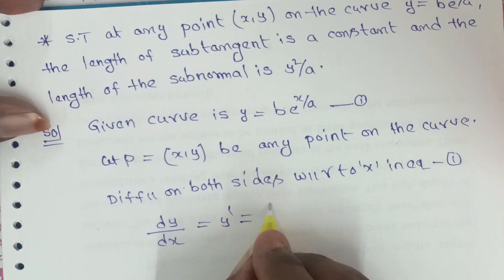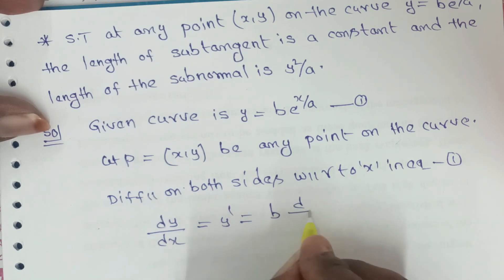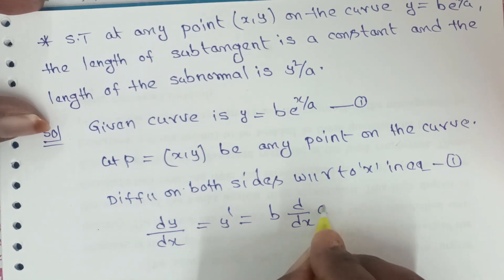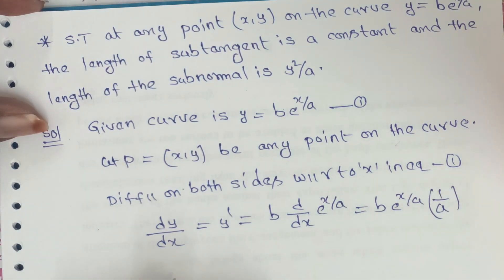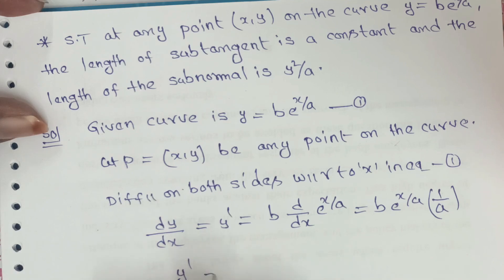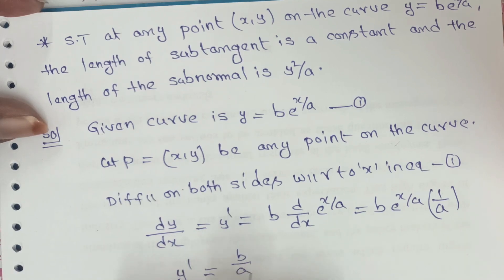Since b is constant, d/dx of e^(x/a) equals b*e^(x/a) times the inner derivative of x/a, which is 1/a. That means y' = (b/a)*e^(x/a).